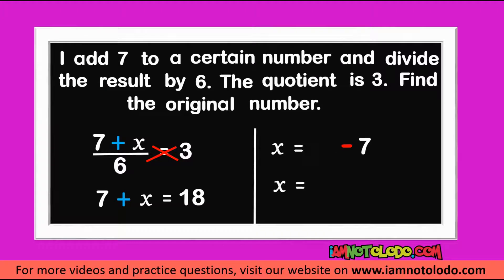So x equals 18 minus 7 is 11. So the original number is 11. Do you understand? Just follow